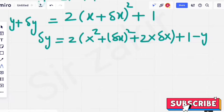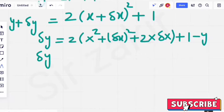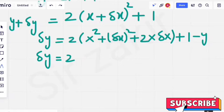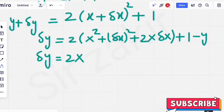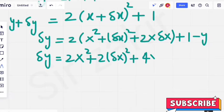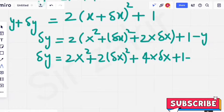What will we have then? delta y is equal to 2. 2 can be multiplied by it. So it is 2x square. 2 delta x square. It becomes 4x delta x plus 1 minus y.